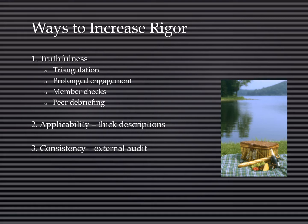For applicability, we often use very thick and rich descriptions of what we're doing. For consistency, we look at an external audit, which involves giving our research information, results, and related materials to an external source with expertise in order to gain information and feedback regarding our methodology and outcomes.